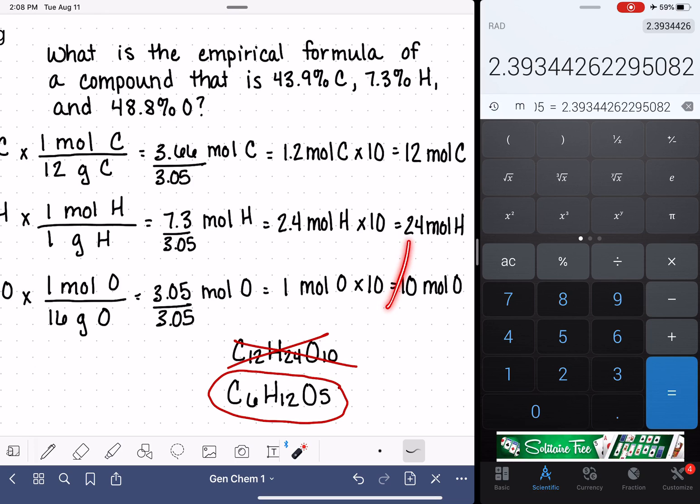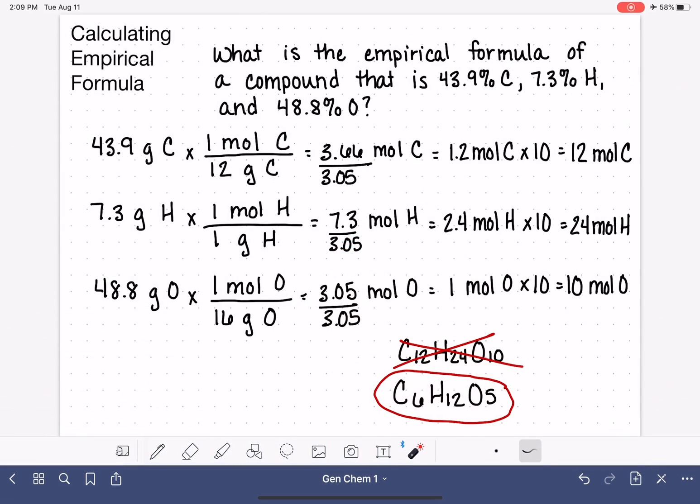Also, you know, if you're very comfortable with math and you're seeing this relationship, you might have been able to see right away the correct number to multiply here would have been 5. That would have taken us straight to the empirical formula. And maybe your math background is strong enough that you are able to do that and you don't need to have this multiply by 10 and then simplify step. Either way, you should be able to get the same answer. And you can always double check, like I said, by calculating the percent composition once you think you know the answer.